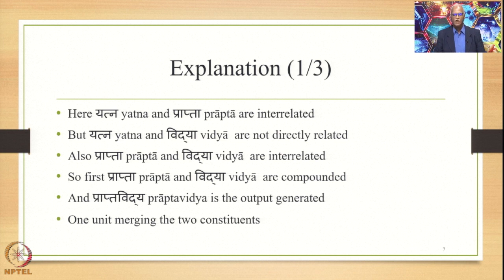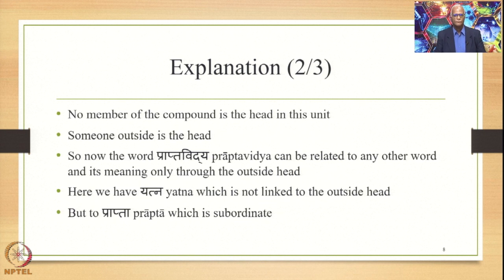But Yatna and Vidya are not directly related. Prapta and Vidya are interrelated, so first Prapta and Vidya are compounded — Prapta, Vidya, Yena Saha. We get the compound Prapta Vidya as the output, where two constituents are merged together. Prapta becomes Prapta, Vidya becomes Vidya. So Prapta Vidya is the Bahuvrihi Samasa. Now in Bahuvrihi Samasa, as we have seen earlier, no member of the compound is the head in the unit — someone outside is the head. Bahuvrihi Samasa is described as Praya Na Anyapadartha Pradhanaha Bahuvrihi.